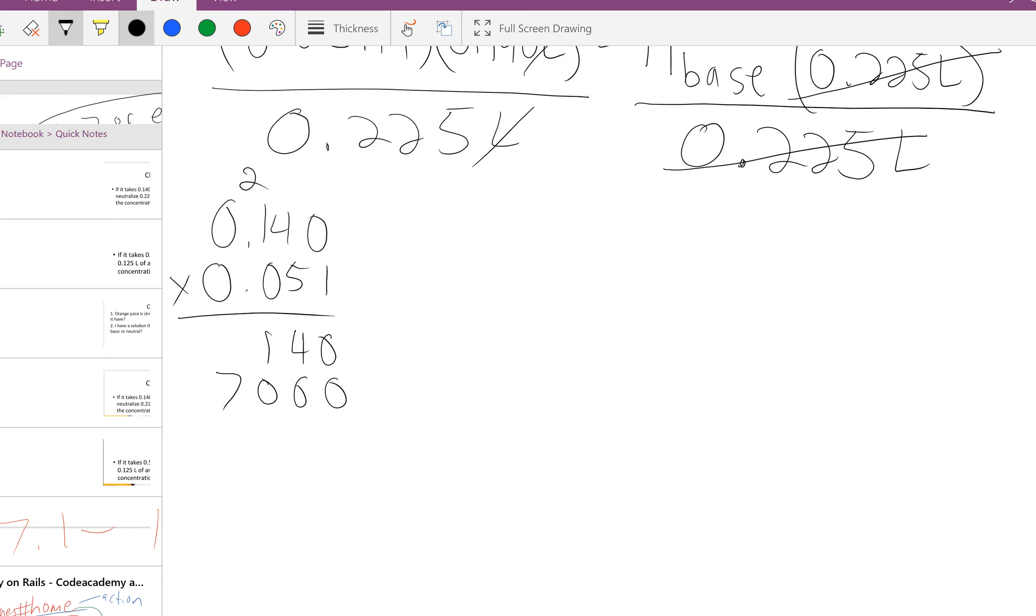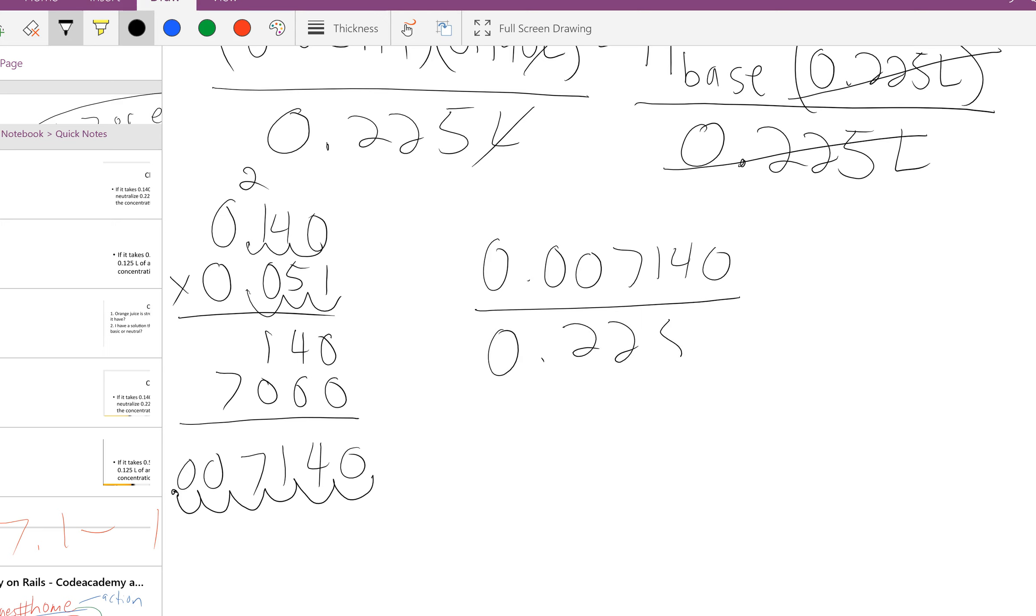So when I solve this, I get 0, 4, 1, 7, but I have 1, 2, 3, 4, 5, 6 decimal places. So my answer is going to be 0.007140 divided by 0.225.